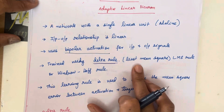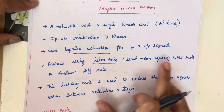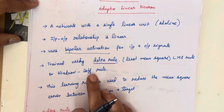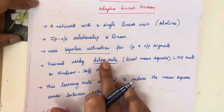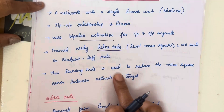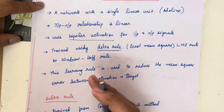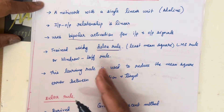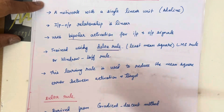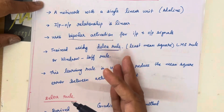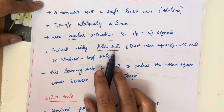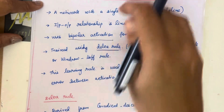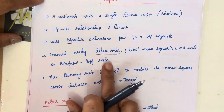The delta rule is otherwise called the least mean square rule, LMS rule, or the Widrow-Hoff rule. The main concept of this delta rule is that it is used to reduce the error between the output received from the network and the target value. ADALINE was invented by Widrow and Hoff in 1960, which is why it is also called the Widrow-Hoff rule.